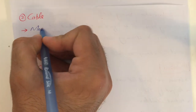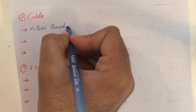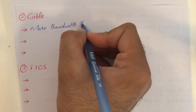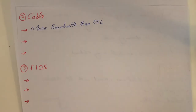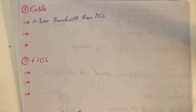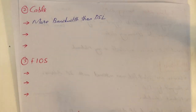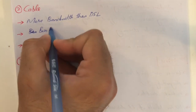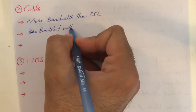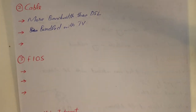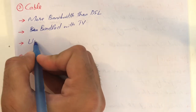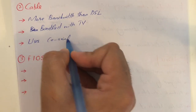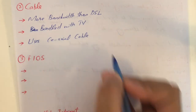The second is cable, or coaxial cable. It has more bandwidth than DSL — we will discuss cable in detail in the networking chapter. Cable is usually bundled with TV, so cable TV uses the same connection. It uses a coaxial cable, a specific kind of cable, to transmit the internet signal.